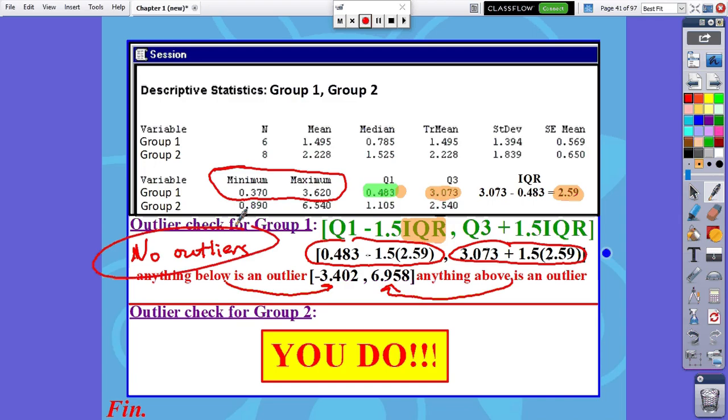What I want you guys to do is to do the same thing that I just did here, but do that for group two. So you're going to focus your attention on group two's IQR. You need to look at this Q1 and Q3, and you also need to use the minimum and maximum for group two, not group one.